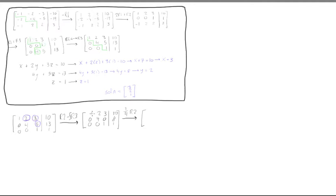So again, row one stays the same: 1, 2, 3, and a 10. And now this one, zero times one-fourth is zero, one-fourth times four is one, zero, and we'll get a two here. And then the third row stays the same: zero, zero, one, one.